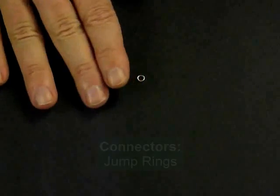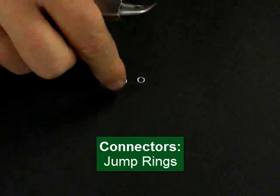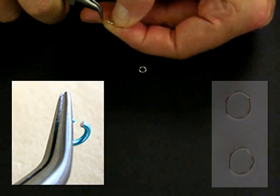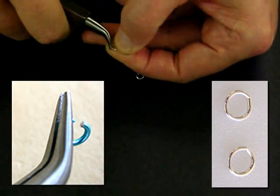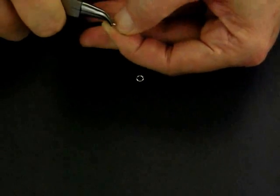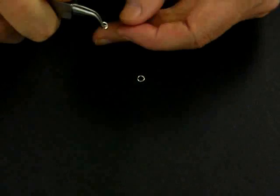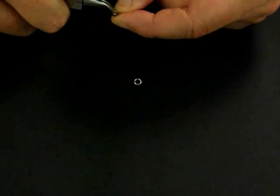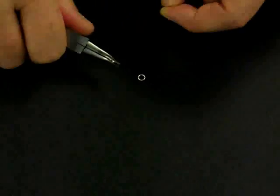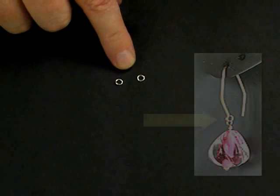The next finding we'll discuss is a finding called jump rings. Jump rings are little rings of wire. They can be opened like these, or they can be soldered closed. Jump rings allow us to connect two wire components one to another. And all we do is bend them up like that to open them, connect the two components onto that loop, and then bend them closed like that. And we have used a jump ring to connect two different components.